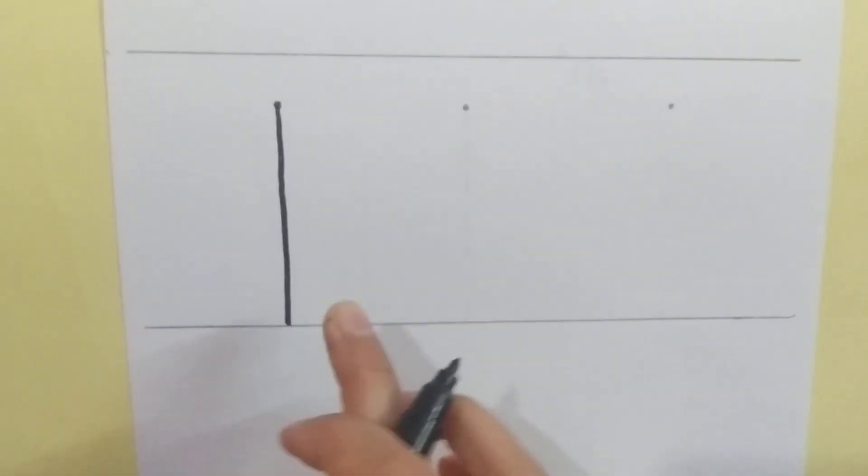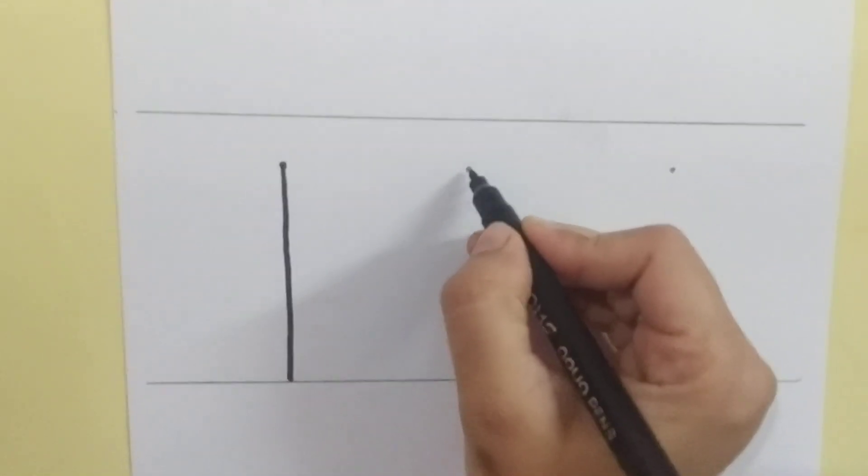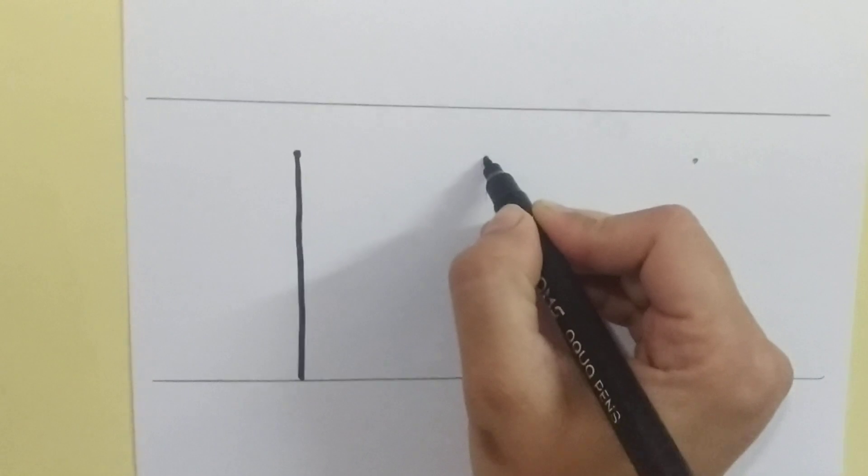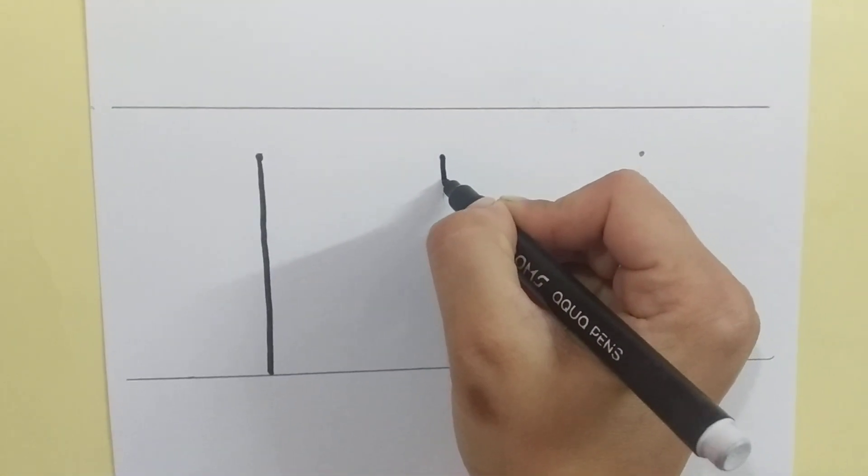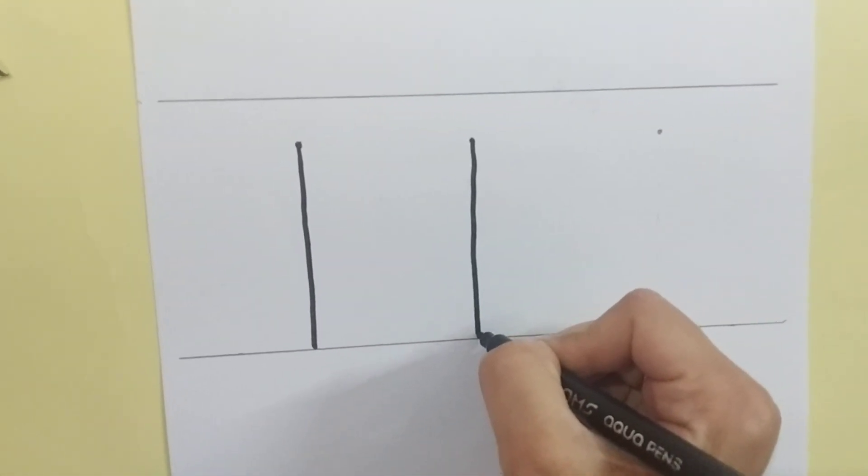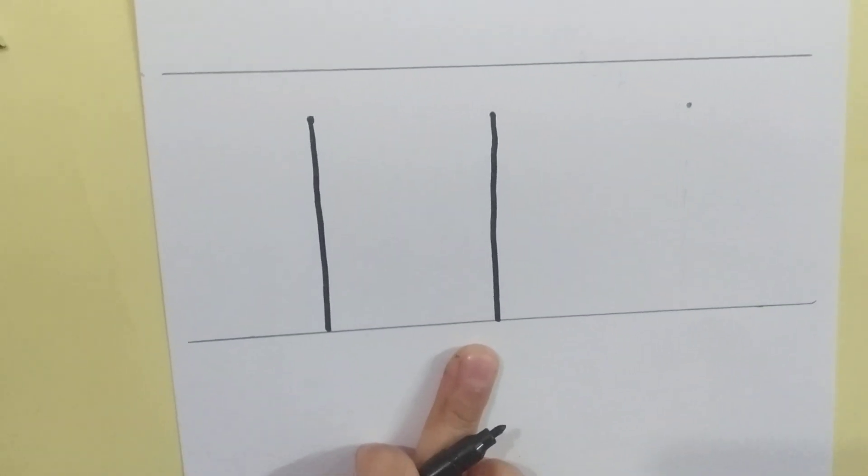Number 1. Once again, we will write 1, a standing line starting from top to bottom like this. Number 1.